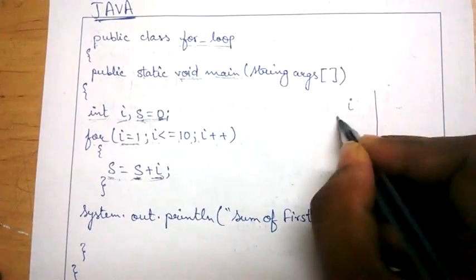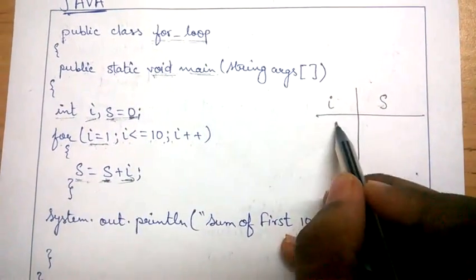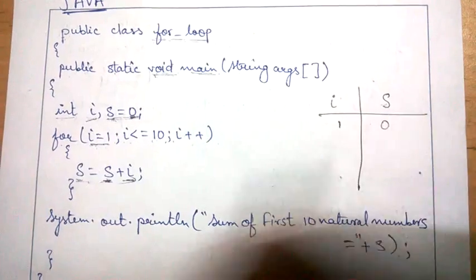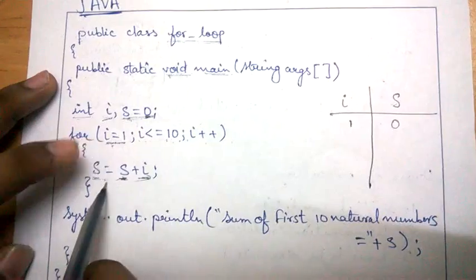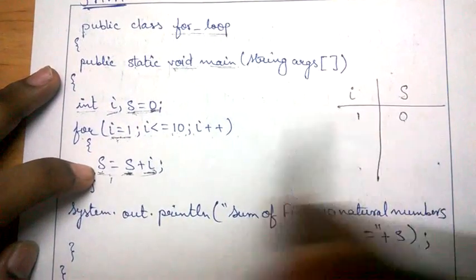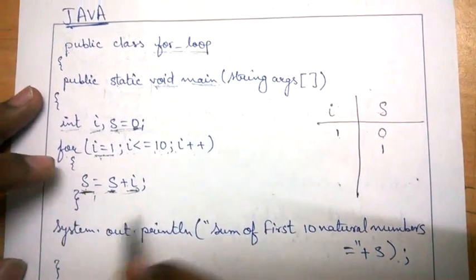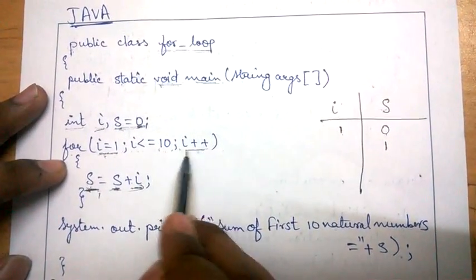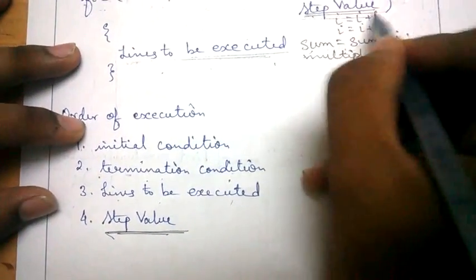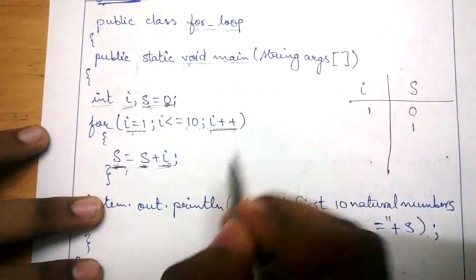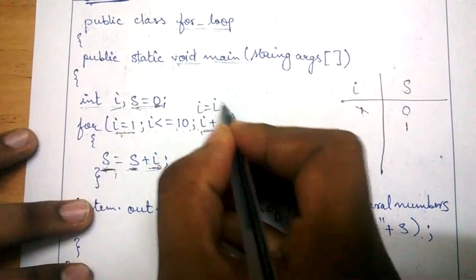Here is the dry run. This is the i variable and this is the s variable. Initially i is 1 and s is 0. The program checks: i equal to 1, i less than or equal to 10 — this satisfies, so it goes inside. s equal to s plus i, so 0 plus 1 equals 1. So 1 is stored in s. Now the step value: i plus plus increases i by 1.